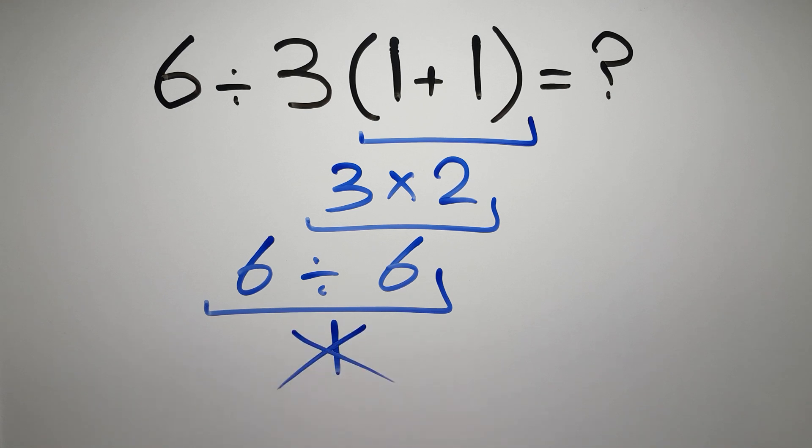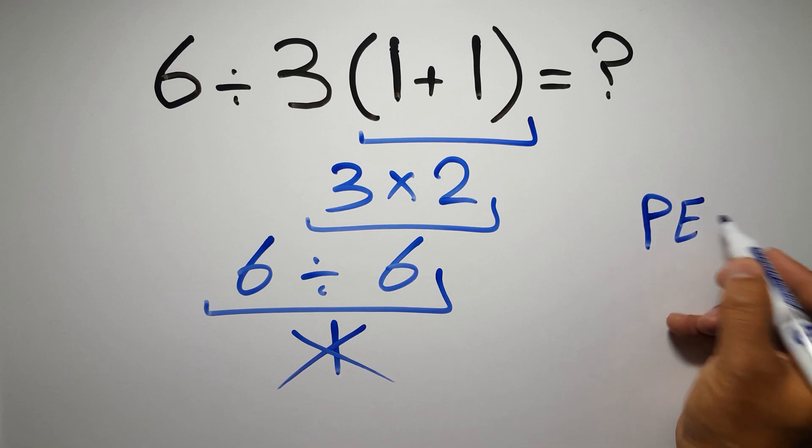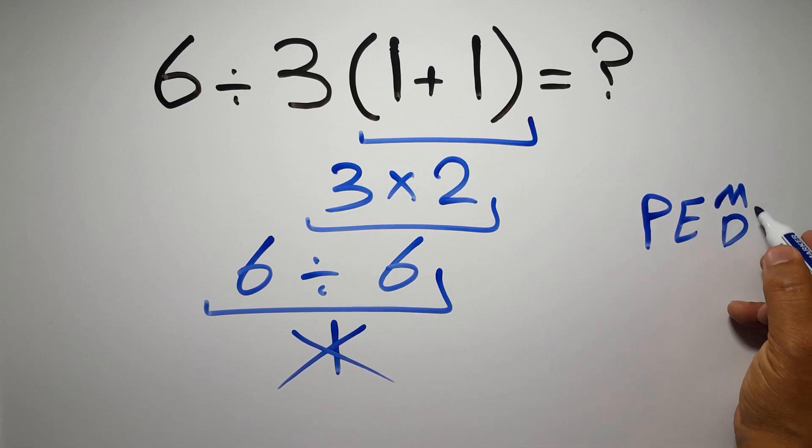because according to the order of operations, first we have to do parentheses, then exponents, then multiplication or division, and finally addition or subtraction.